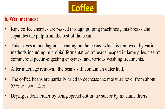In the wet method, ripe coffee cherries are passed through pulping machines, which breaks and separates the pulp from the rest of the bean. This leaves a mucilaginous coating on the beans, which is removed by various methods including microbial fermentation of beans heaped in large piles, use of commercial pectinase digesting enzymes, and various washing treatments. After mucilage removal, the beans still contain an outer hull. The coffee beans are partially dried to decrease moisture from about 53% to about 12%.